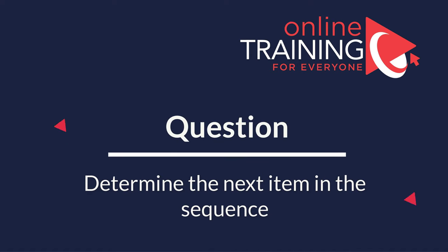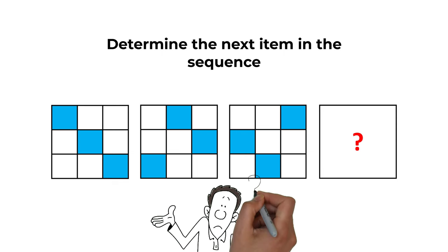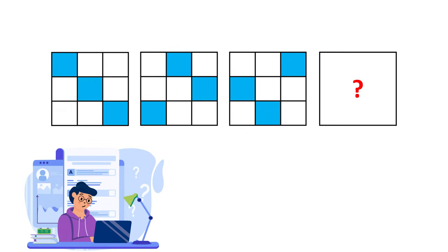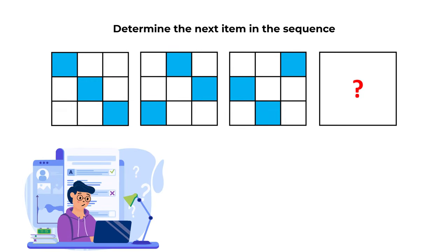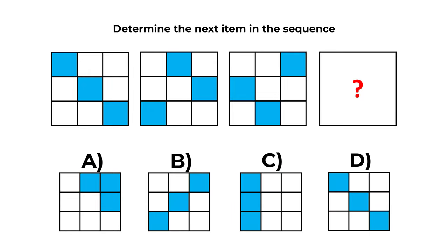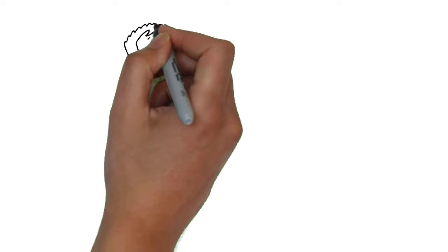Here is an interesting problem you might frequently get on the test. You need to determine the next item in a sequence of large squares. Each large square contains nine small squares of different colors. You have four choices — A, B, C, and D. Give yourself 10 to 30 seconds to find the answer.